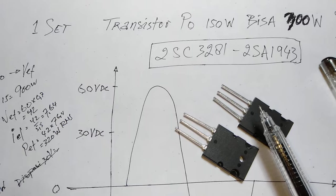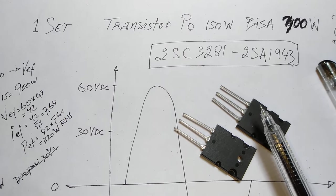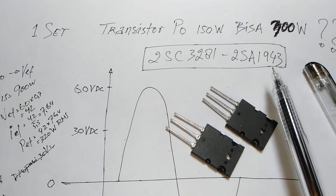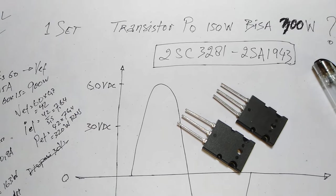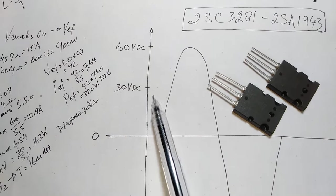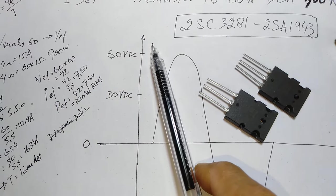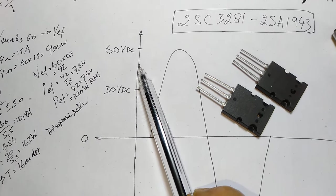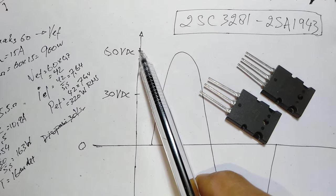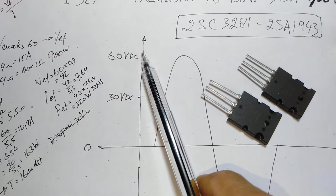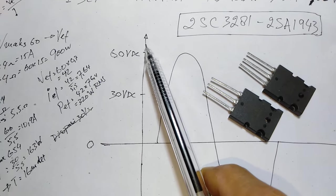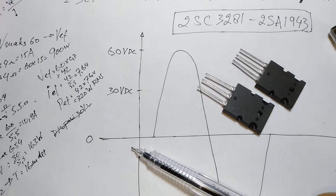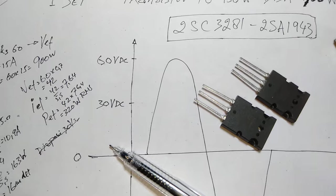Di sini ada terlihat transistor daya final 2SC3281 dan 2SA1943 ya. Di sini bisa dilihat gambar tegangan frekuensi, di sini 60V DC ya. Kita anggap aja berasal dari trafo 15A, CT 47 atau CT 48 ya, AC.